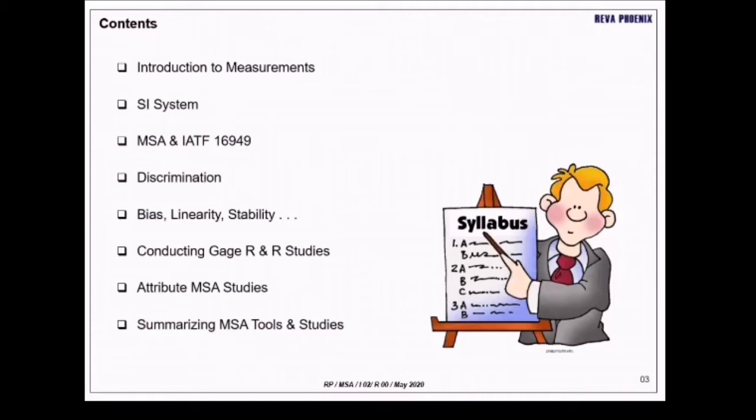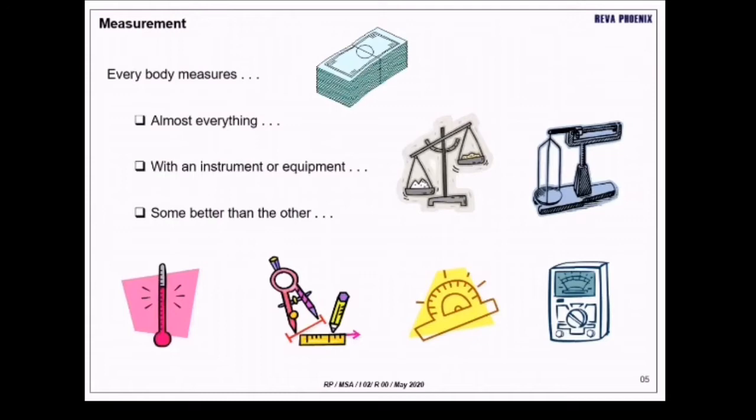We are going to proceed ahead with the contents. We are going to talk about measurements, the metric system, MSA and its relationship to ISO TS 16949 or the improvised IATF 16949 latest edition, the discrimination resolution, the key concepts of bias, linearity and stability, and the basics of gauge repeatability and reproducibility study.